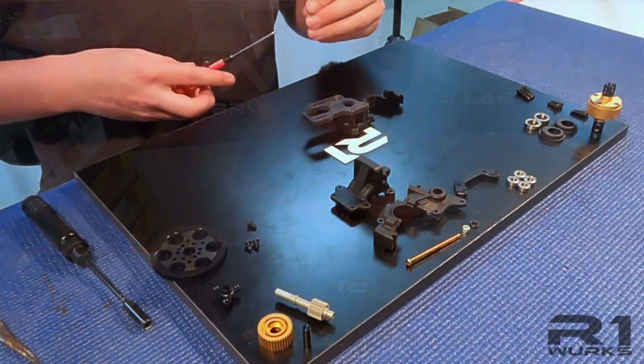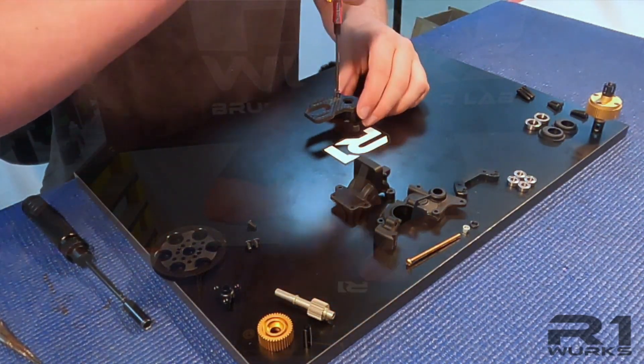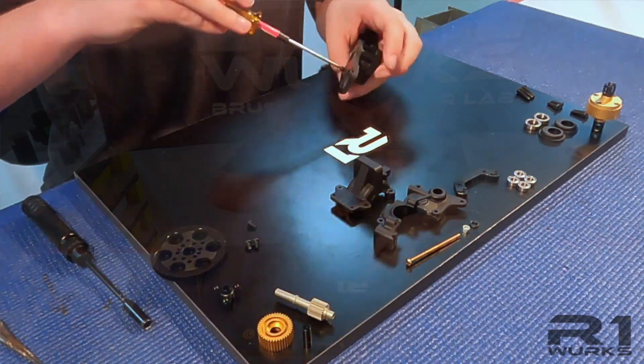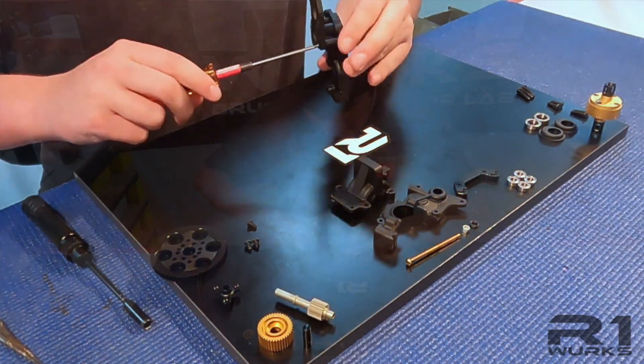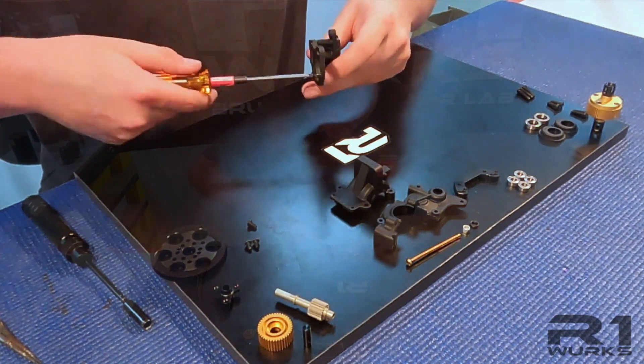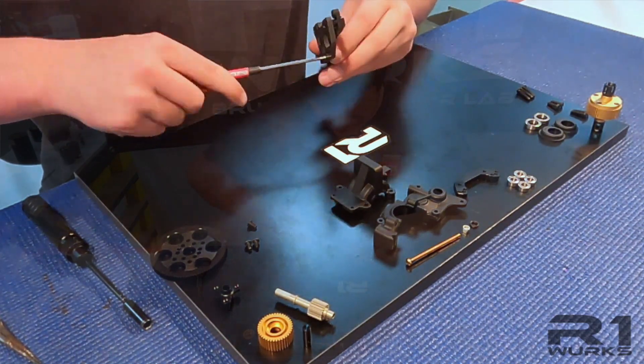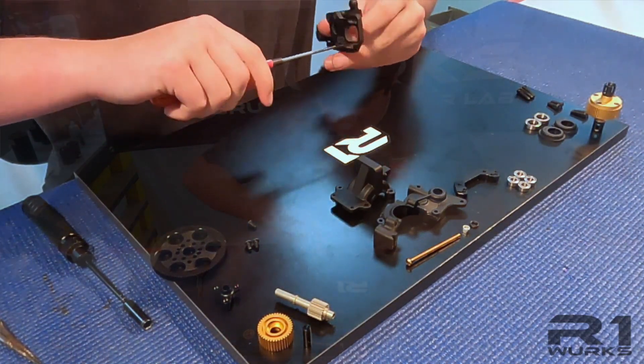And then the third screw on the bottom does not need a shim. Otherwise it will not be straight. And there we go.